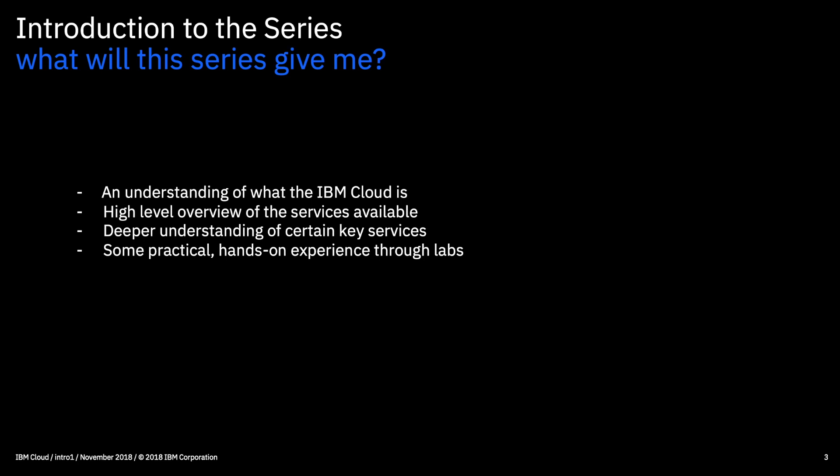So what are we aiming to do with this series? Fundamentally, we want to provide you with a good foundational level knowledge of what the IBM Cloud is and how to use it. We're going to start by giving you a very high level overview of each of the services available in the catalogue, then go into more detail on certain key services — the kinds of things you're likely to need first to build out your infrastructure or applications. We'll do this through a mixture of lectures and labs.